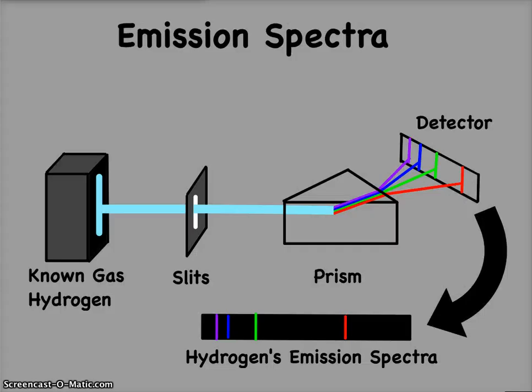So first thing we need to do is figure out what the light looks like from known gases. You may have done this in the classroom, or you're going to do it depending on where you're at in today's lesson. We have this known gas, hydrogen, and we can put it into a power source and make it emit light. This light, we're going to have it send through some slits to make sure it goes all in the same direction. And then we're going to send that light through a prism, and when we spread that light out, we find out that there's actually different colors, and we call this a color spectrum.